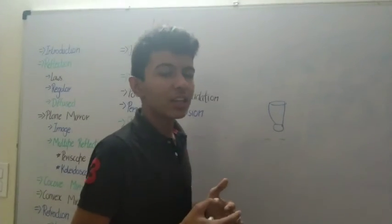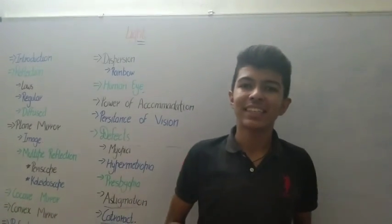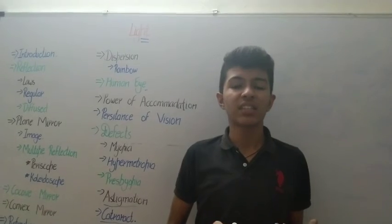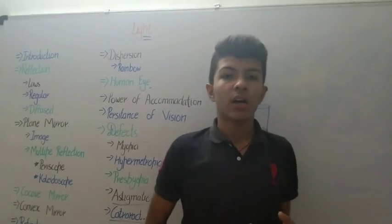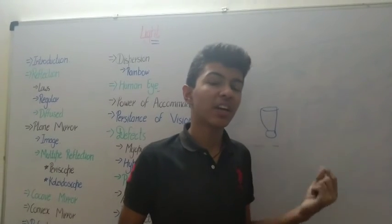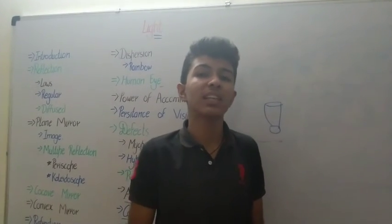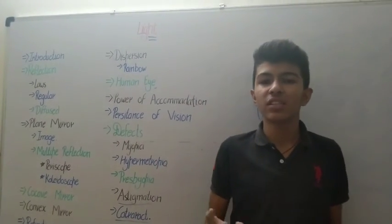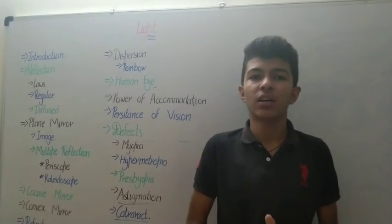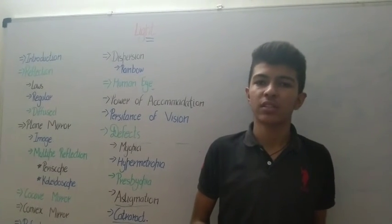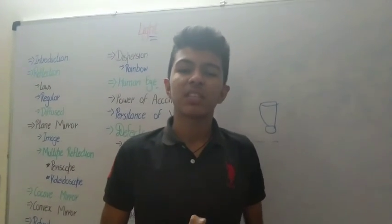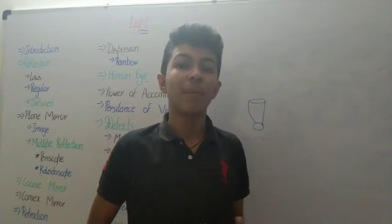Other defects include color blindness, where a person cannot differentiate between certain colors when they are mixed — this is usually hereditary and currently has no cure. The most severe defect is complete blindness, where a person cannot see at all.